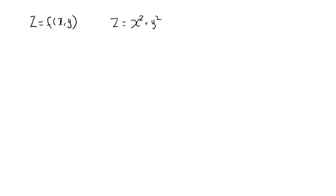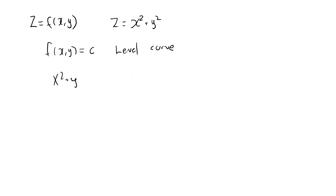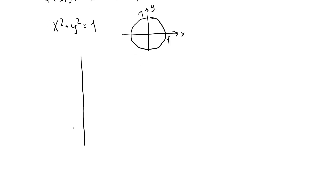Remember what we mean by a level curve of a function of two variables. A level curve of f is the collection of all points x and y such that f(x, y) is equal to some given constant c. For example, for our function x squared plus y squared, we have a level curve by setting this equal to 1. This is an equation of a circle, so the level curve looks like a circle with a radius of one.